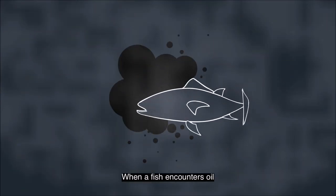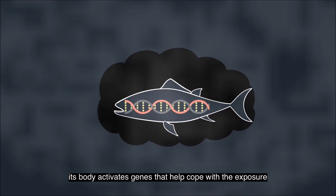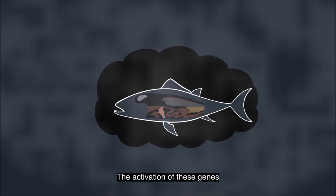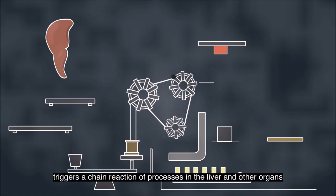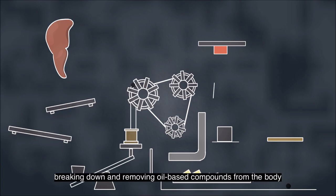When a fish encounters oil, its body activates genes that help cope with the exposure. The activation of these genes triggers a chain reaction of processes in the liver and other organs, breaking down and removing oil-based compounds from the body.